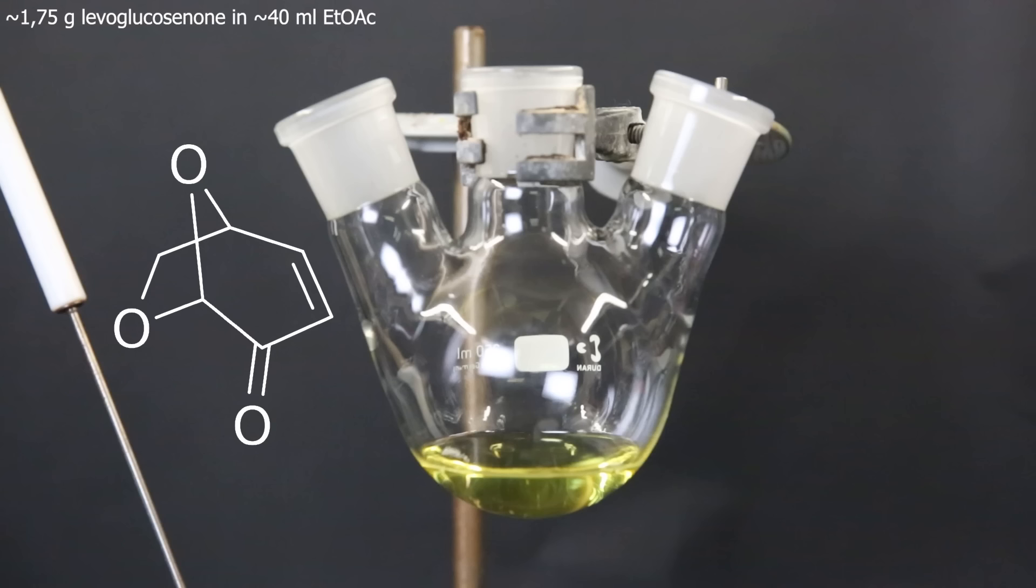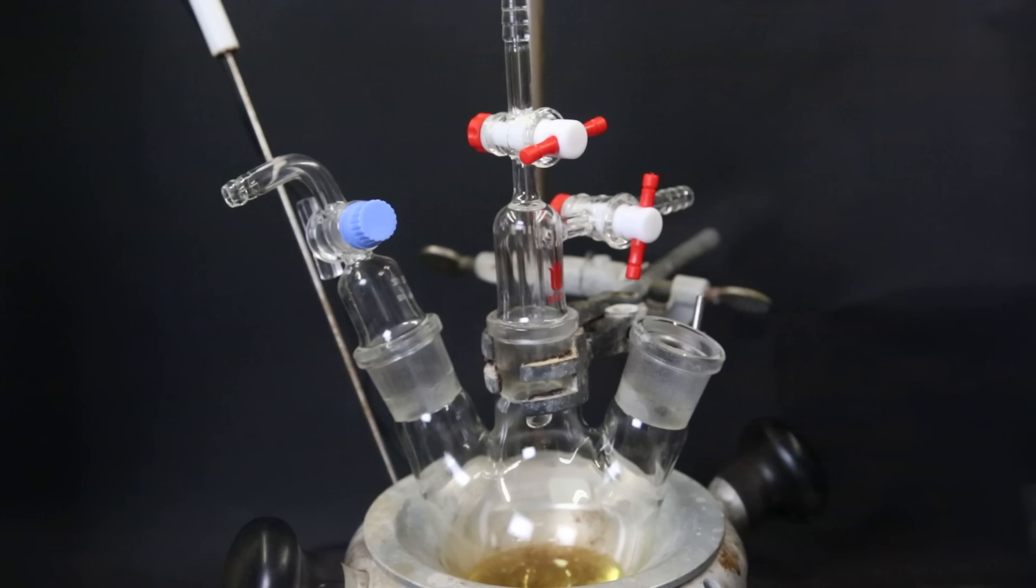Now I have to perform a selective hydrogenation to only hydrogenate the double bonds and not touch the ketone. The solvent for this hydrogenation is ethyl acetate, which is already in here. So I move the flask to a heating mantle and attach the gas adapter, a two-way gas adapter and a funnel.